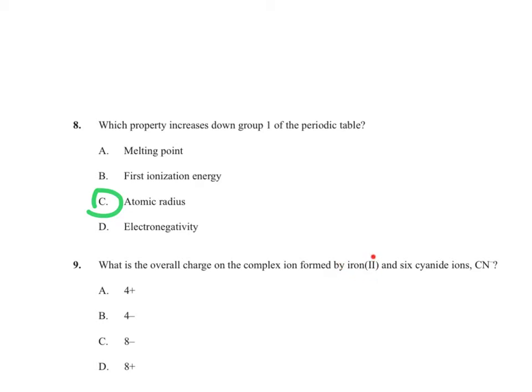For the charge on the complex: Fe²⁺ has a 2+ charge, and the six ligands each have a 1- charge. Six times negative one is -6, and combined with +2 that gives an overall charge of 4-.